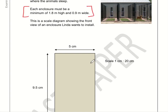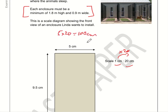Part B: we know the dimensions the enclosure must be. Here is a scale drawing where 1 centimetre represents 20 centimetres in real life, so real life is 20 times bigger than the drawing. If this side is 5 centimetres, in real life it's 5 times 20 = 100 centimetres. On the bottom we have 9.5 times 20.